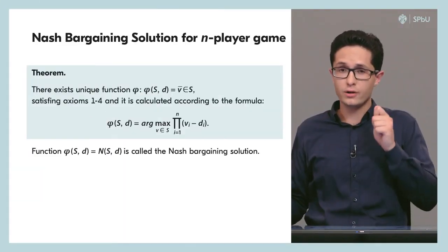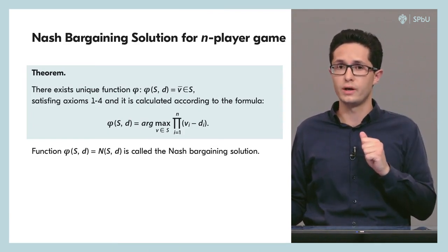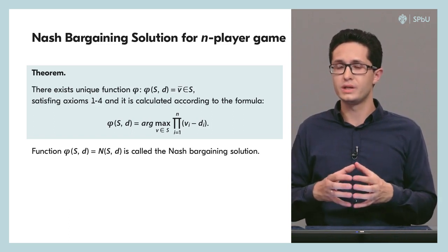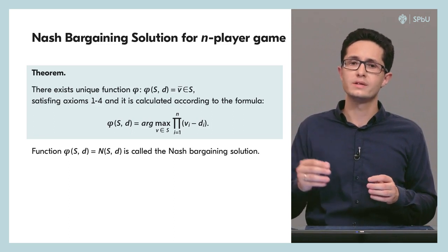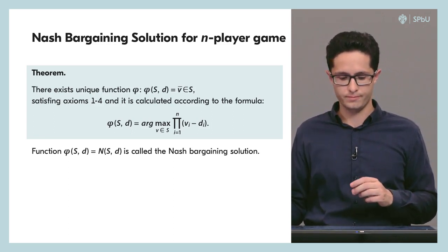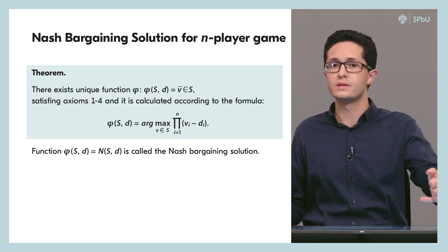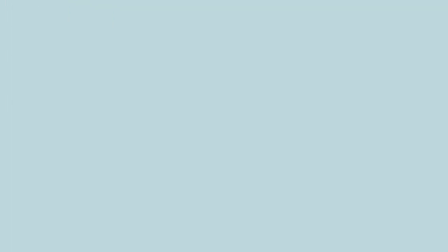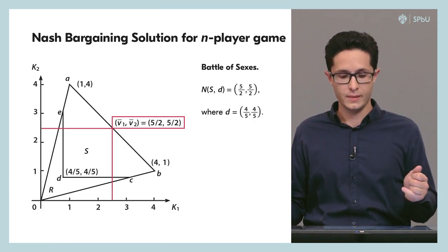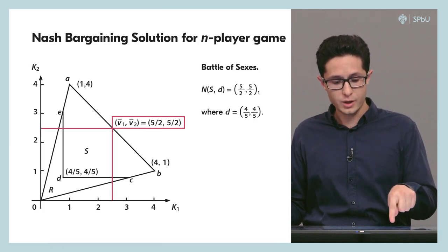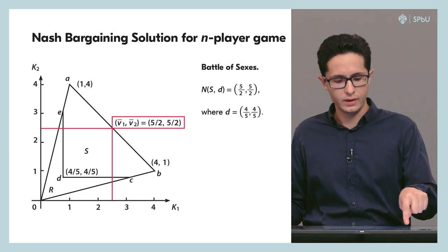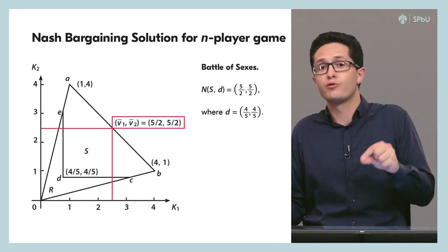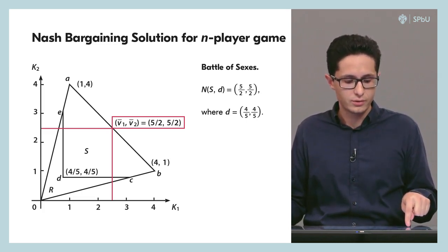It has been proved that there exists a unique function satisfying these four axioms, and it can be calculated using an explicit formula. The formula is straightforward to compute for small numbers of players, but as the number of players increases, the computation time grows large. The solution that satisfies these four axioms is called the Nash bargaining solution. For our Battle of the Sexes example, the Nash bargaining solution is located right in the middle of the interval A and B, because this interval — which is the set of Pareto-optimal outcomes — is symmetrical with respect to the disagreement point D.